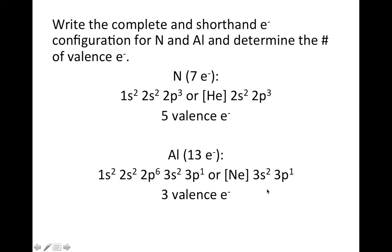Alright, so let's end by doing a quick practice example. It says, write the complete and shorthand electron configuration for N and Al, and determine the number of valence electrons. So N has 7 electrons, so if we're starting at the beginning.